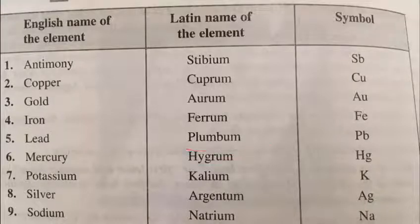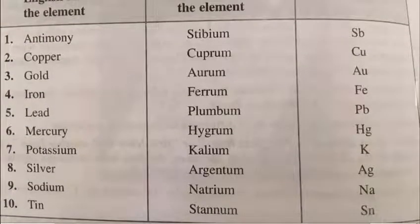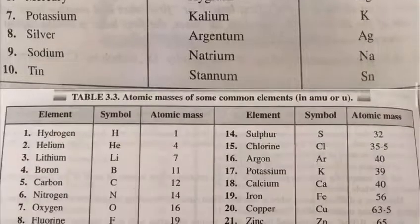from plumbum that is Pb, mercury from hygrum that is Hg, potassium from kalium that is K, silver from argentum that is Ag, and sodium from natrium that is Na. Similarly tin from stannum that is Sn.